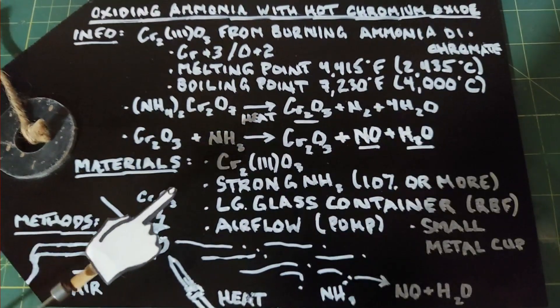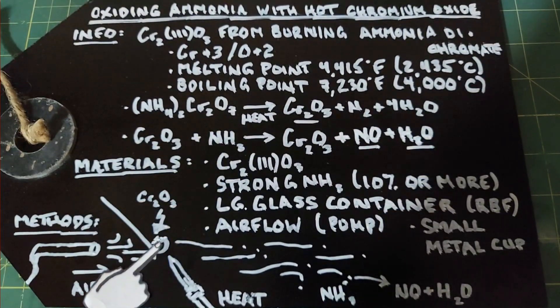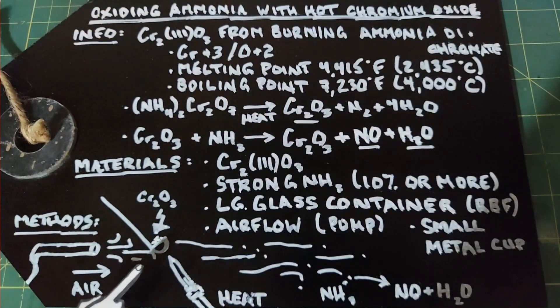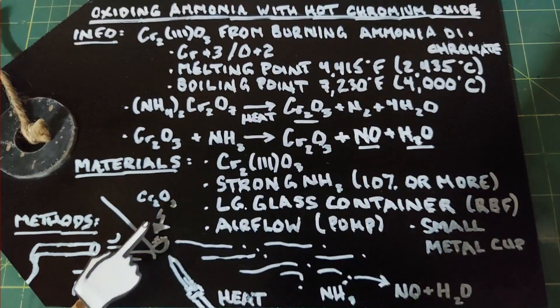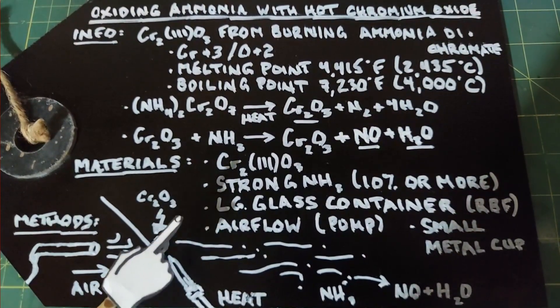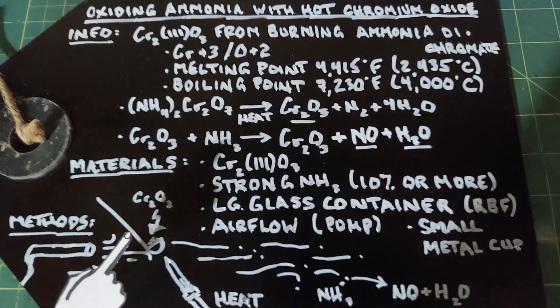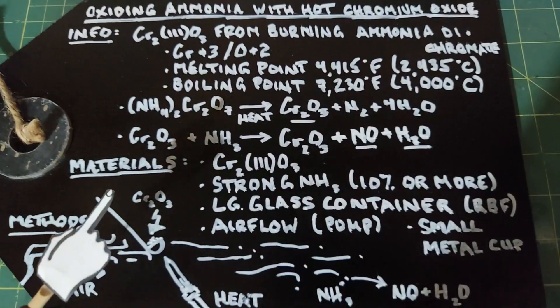The reaction itself is pretty simple. The setup is not necessarily. The idea here is to heat the chromium oxide in a small metal cup while it's in an environment of ammonia gas. That usually comes by heating the ammonia with an airflow that can blow this hot chromium oxide into the ammonia environment, and therefore we get the reaction to occur. I have a setup that I think will work and will be successful, so let's get to it.